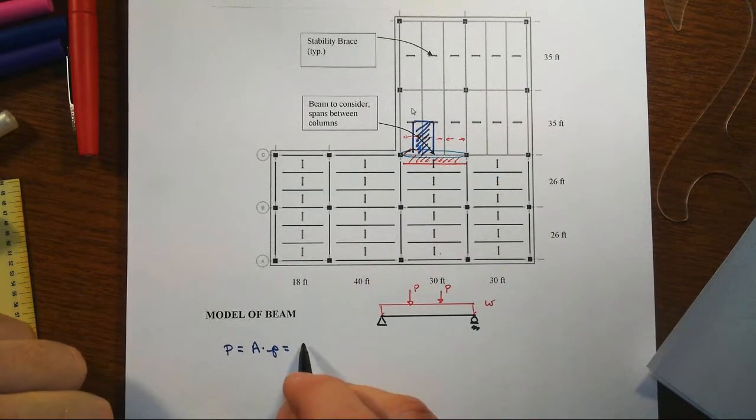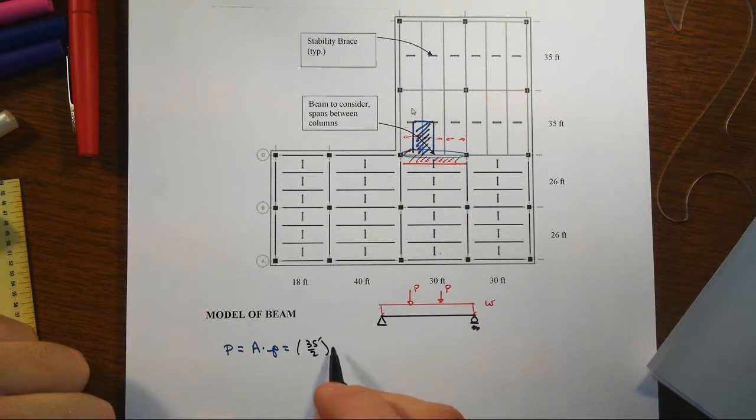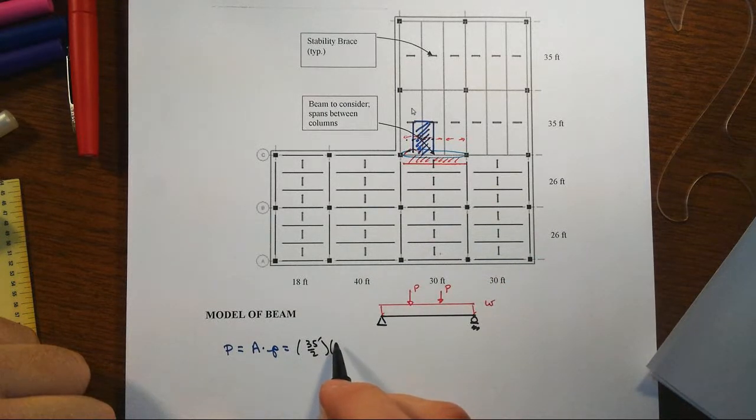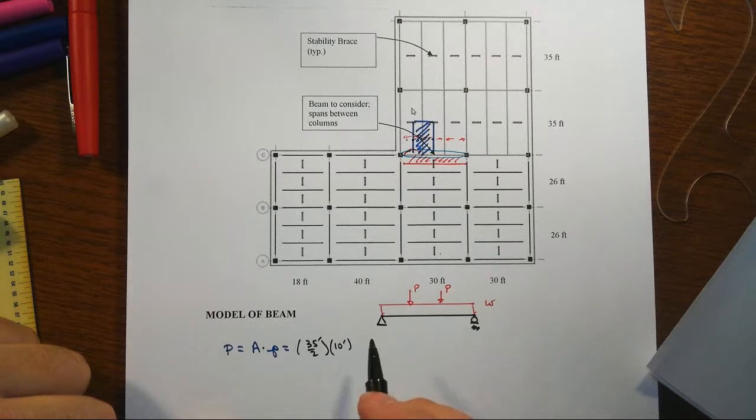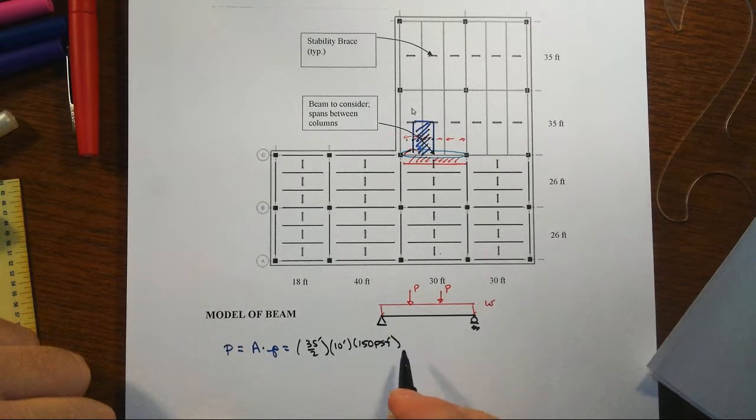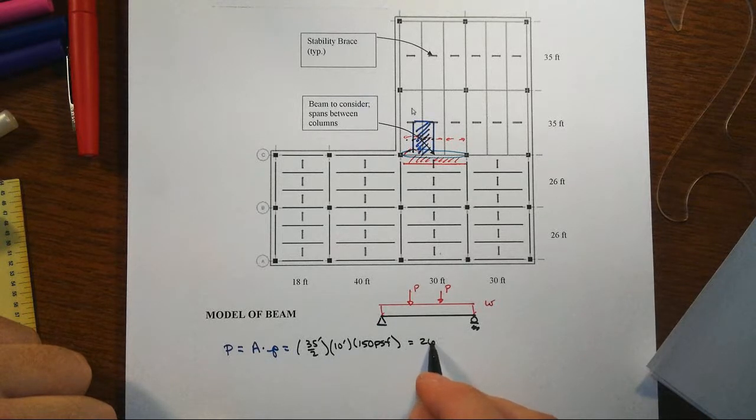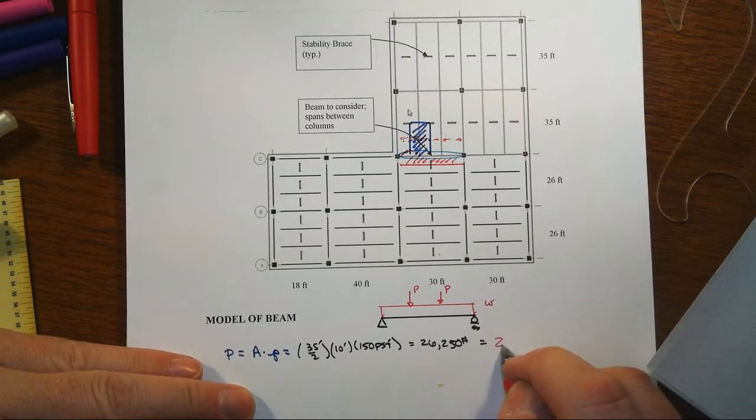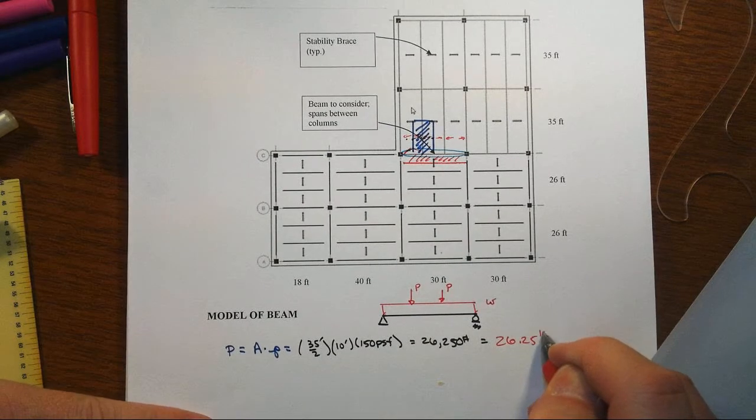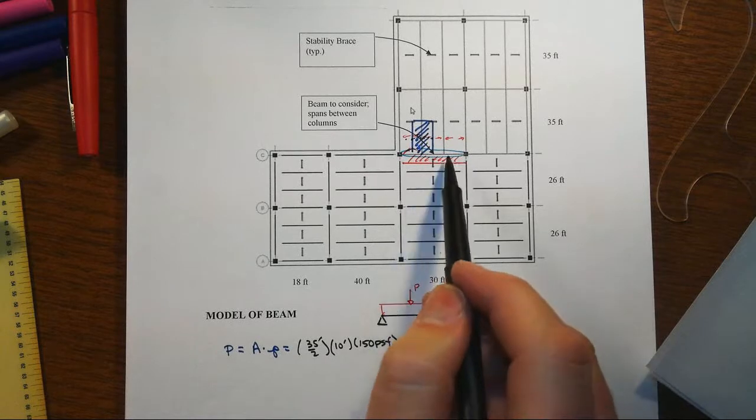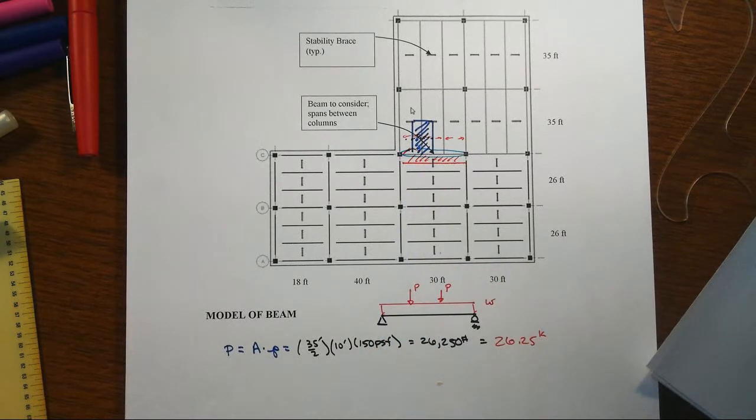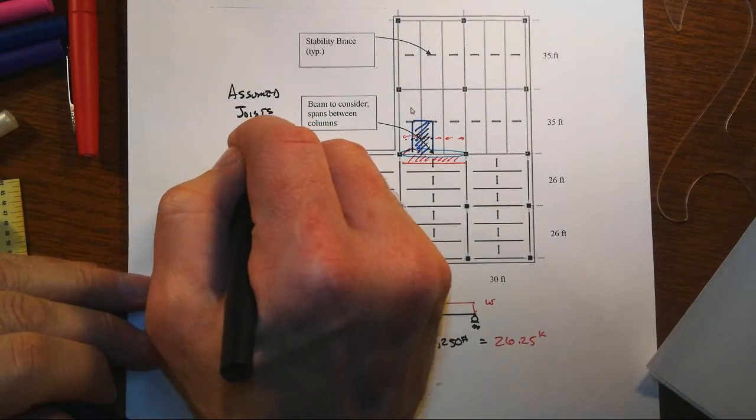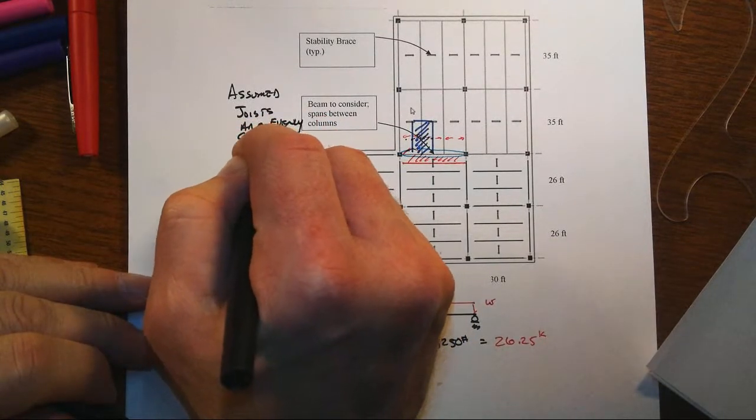One dimension is 35 feet divided by 2. The other, let's see this was 5 feet over one way, 5 feet the other. So that's going to be 10 feet. And then we'll multiply that by the 150 pounds per square foot. And that should equal 26,250 pounds or 26.25 kips. We'll have two of those because we have two reactions that are identical coming in. Again, we've assumed here that joists are evenly spaced, at least within that bay.